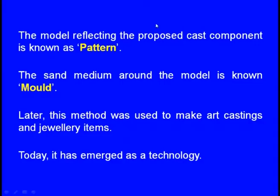Whenever we want to make a particular component, a similar cavity is created inside a moulding medium. We melt the metal, pour it into the mould medium, and after the melt solidifies, we break the mould medium. The model used for making the cavity is known as the pattern — the model reflecting the proposed cast component. The sand medium around the model is known as the mould.